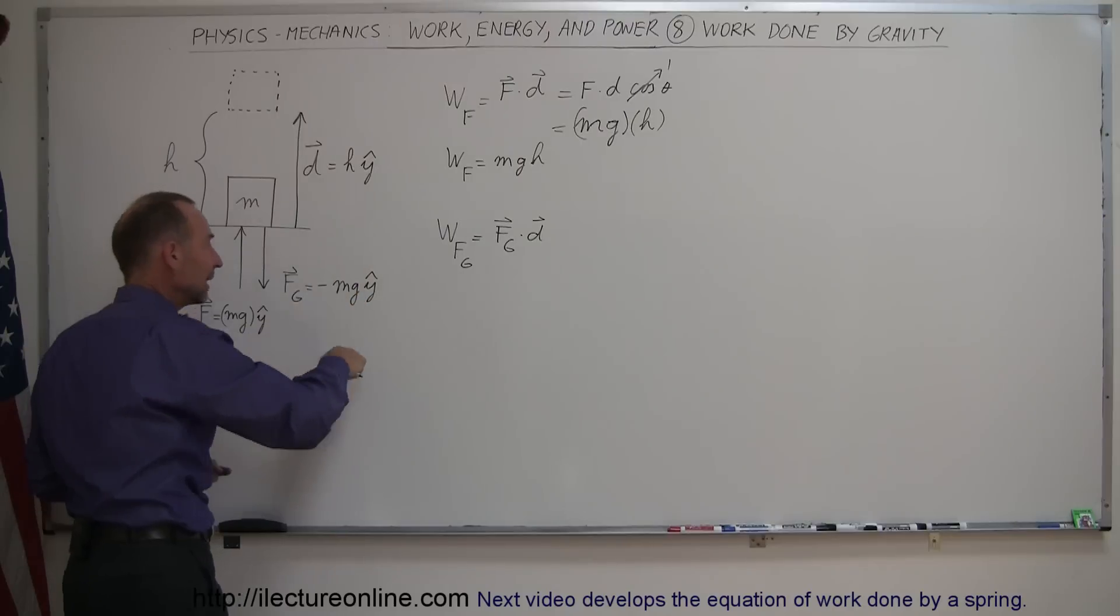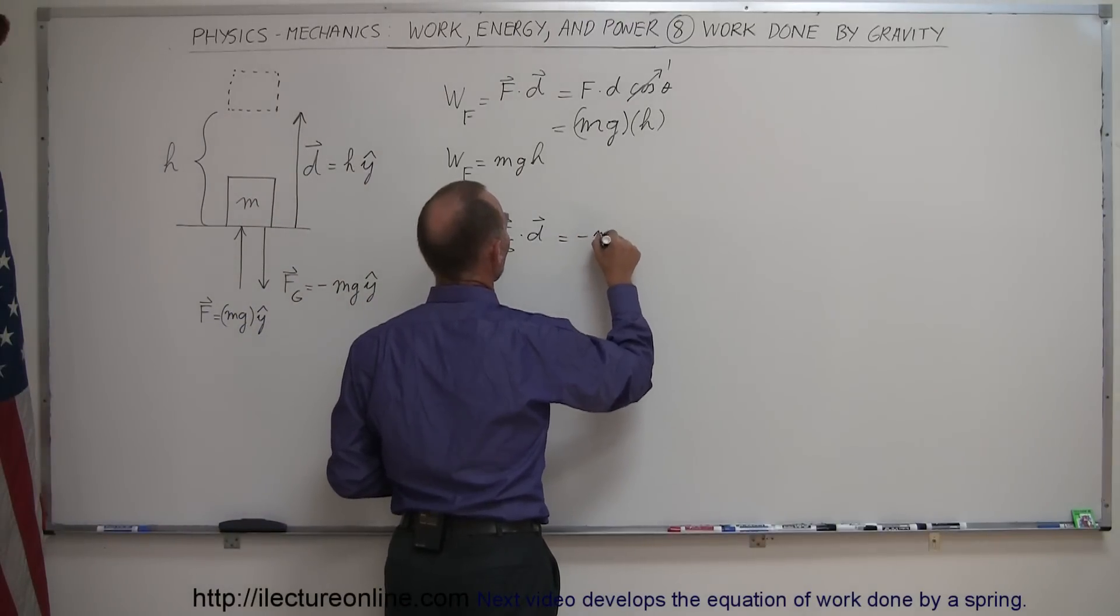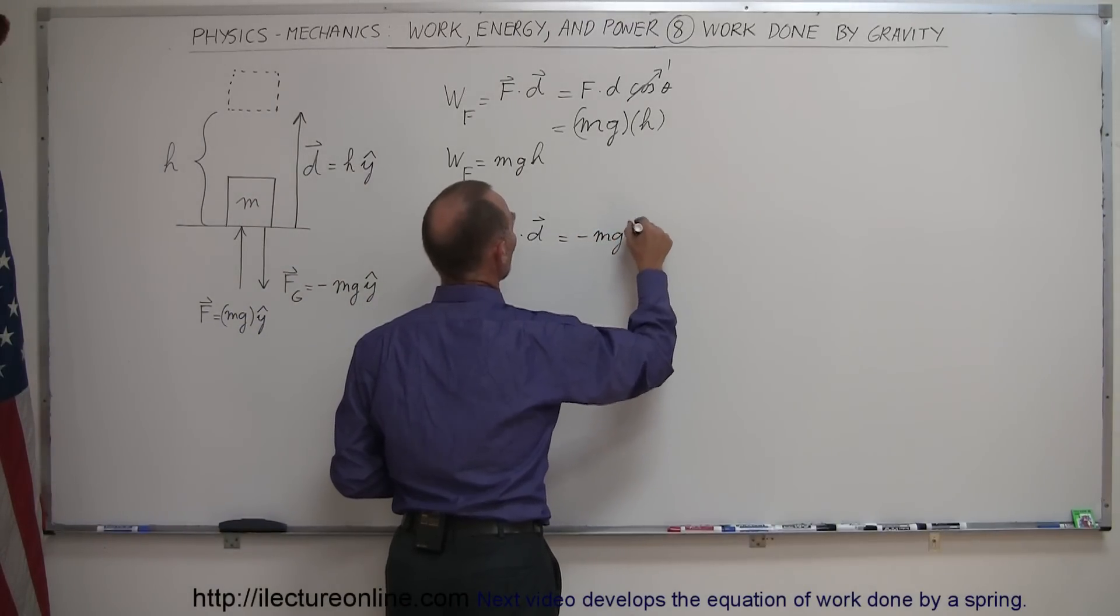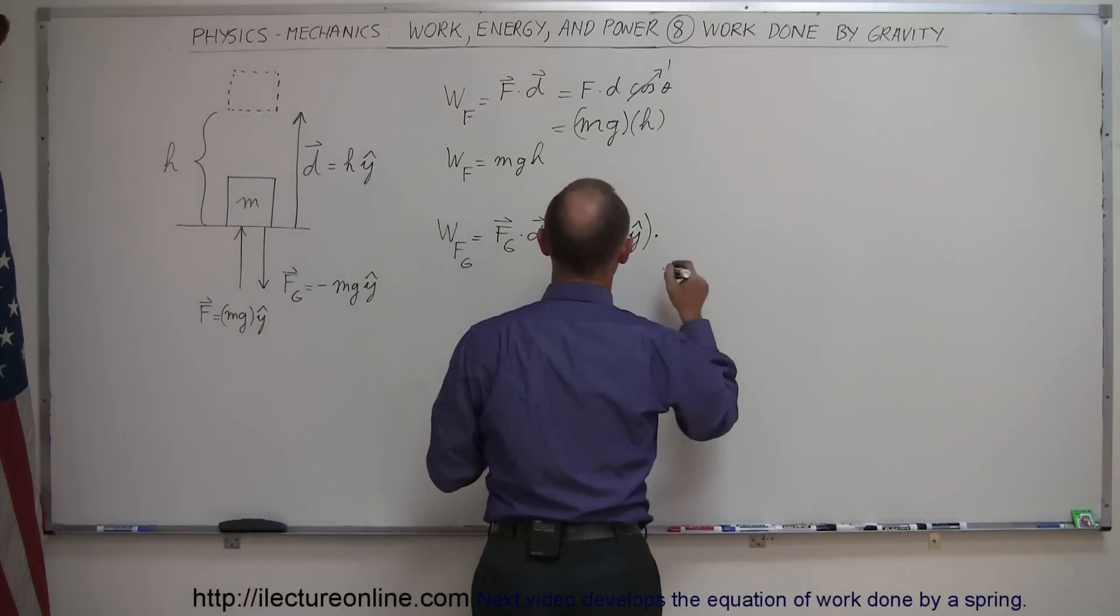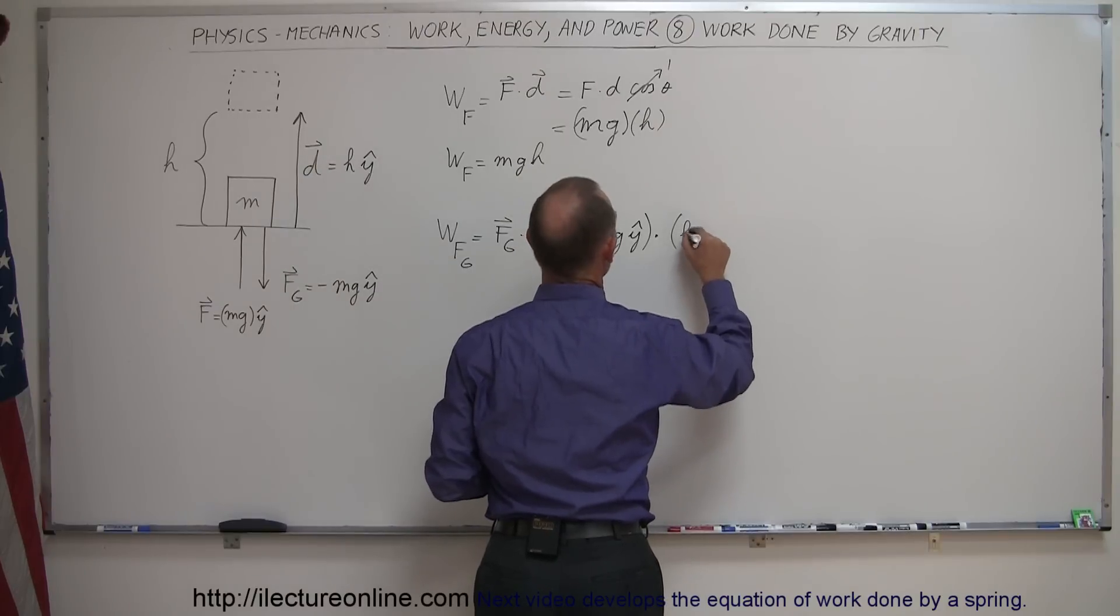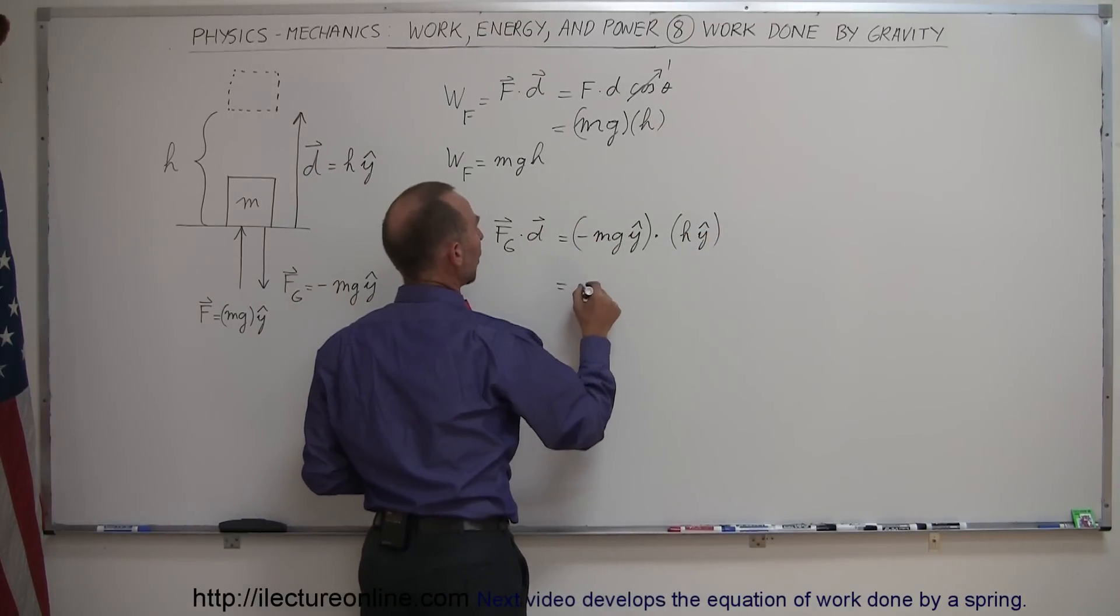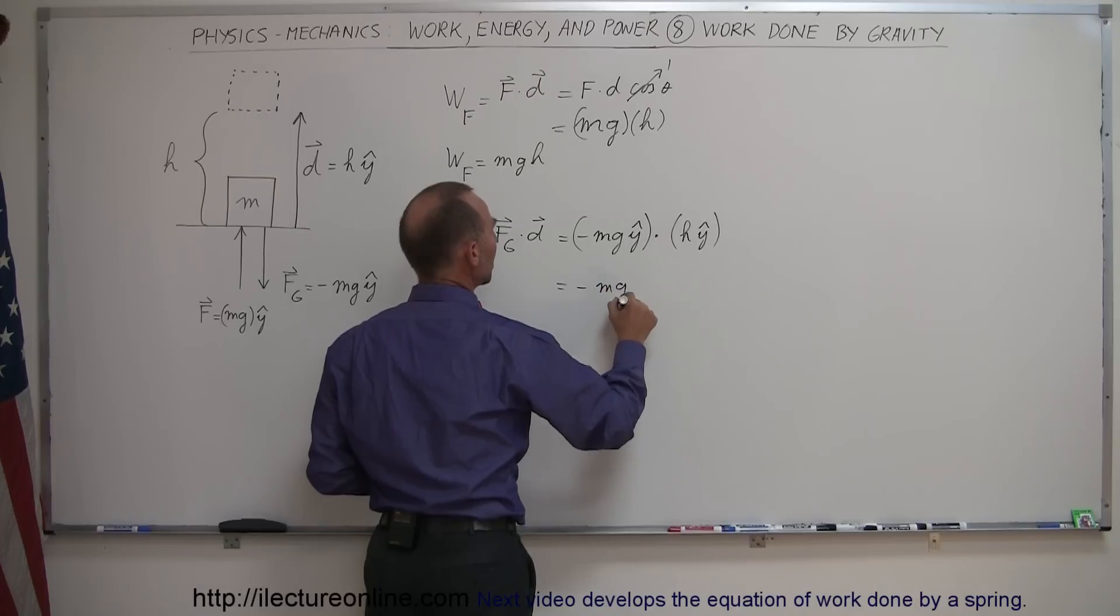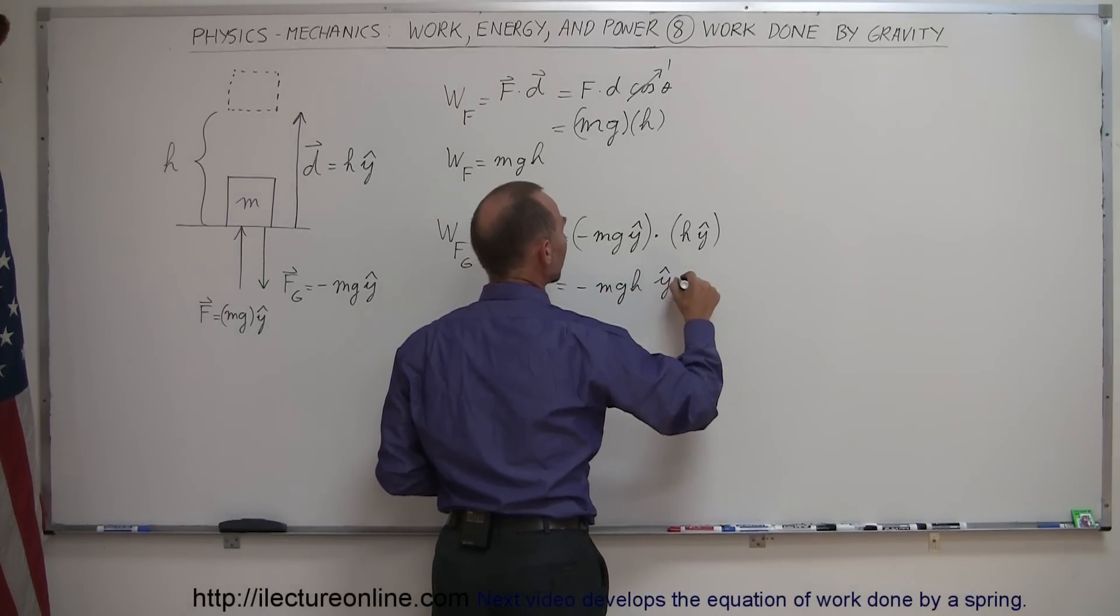It's minus mg, because it's pointing in negative y direction. So this is equal to minus mg in the y direction, and we're going to dot that, or multiply it as a dot product with the displacement, and the displacement is h in the positive y direction, so that's h in the y direction like that.